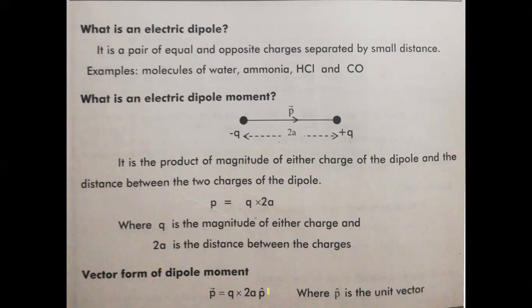Next let us move to the concept of dipole. 'Di' means two. So what is an electric dipole? It is a pair of equal and opposite charges separated by a small distance.